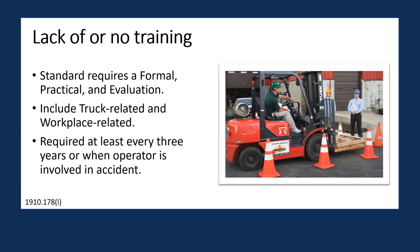The training has to include both truck-related topics and workplace-related topics. Examples of truck-related topics include the operating instructions, information for each attachment that's going to be used on that truck, the capacity of the forklift, how to inspect it, and some of its operating limitations. Examples of workplace-related topics include what types of loads they'll typically be lifting in the workplace, how to deal with pedestrians and right-of-way rules, and if you use any gas-powered trucks, the procedures for low-ventilation areas.